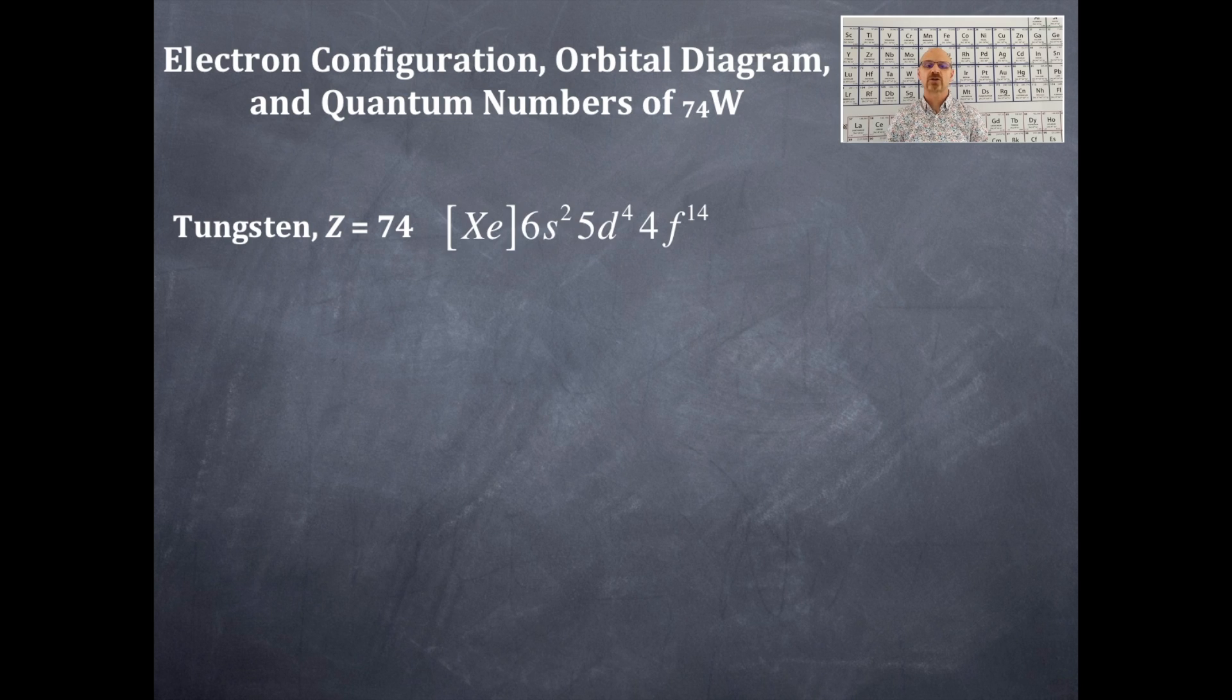Here is the electron configuration for tungsten. It is xenon in brackets 6s² 5d⁴ 4f¹⁴. I'm going to show you another way to write this: xenon 4f¹⁴ 5d⁴ 6s².